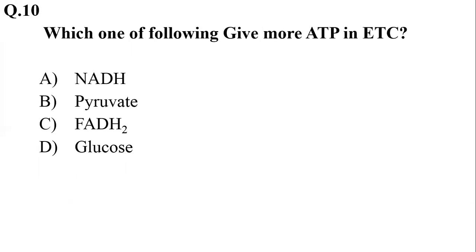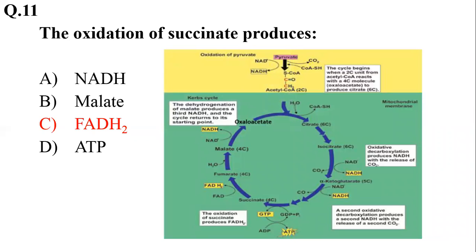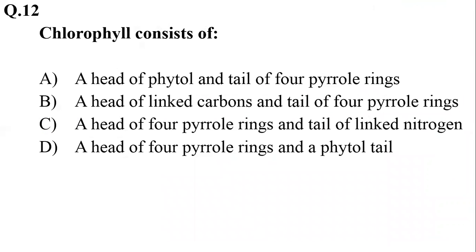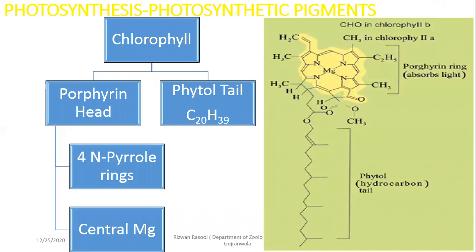As you can see the equation of one Calvin cycle where 6 NADPH are being used. Question 10: Which of the following gives more ATP via the electron transport chain? It is obviously NADH, as compared to FADH2. The energy output of NADH is more. Pyruvate and glucose will not be used directly in the electron transport chain. The oxidation of succinate produces FADH2. Chlorophyll consists of a head of 4 pyrrole rings and a phytol tail, so the right option is delta.